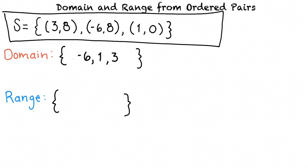Very good. Now what about the range? Knowing that the range is the set of second elements in the ordered pairs, I would say the range equals {0, 8, 8}. Very close — but when a number repeats, we only list it once, so the range would actually be {0, 8}.